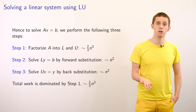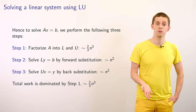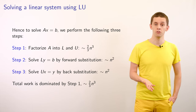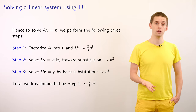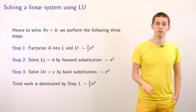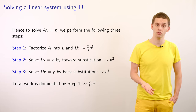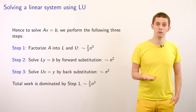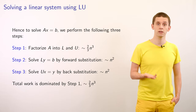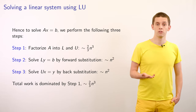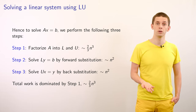To solve the matrix system Ax = B using LU factorization requires three steps. First, factorize A into L and U, costing asymptotically 2n³/3 operations. Second, solve Ly = B using forward substitution, costing asymptotically n² operations. Third, solve Ux = y using back substitution, costing another n² operations. The total work is dominated by step 1, the 2n³/3 factorization cost.